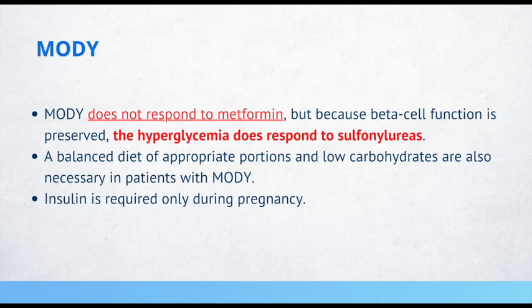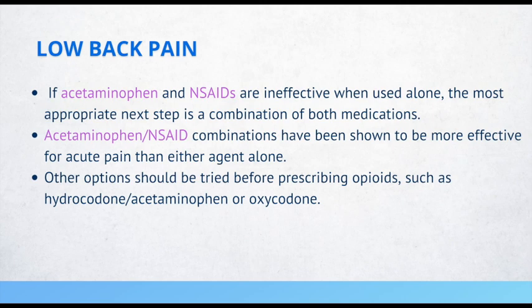Low back pain: if acetaminophen and NSAIDs are ineffective when used alone, the most appropriate next step is a combination of both medications, which has been shown to be more effective for acute pain than either agent alone. Other options should be tried before prescribing opioids such as hydrocodone-acetaminophen or oxycodone. Short-term use of muscle relaxants with NSAIDs is also an option. Opioids should not be the first step for a patient with low back pain.